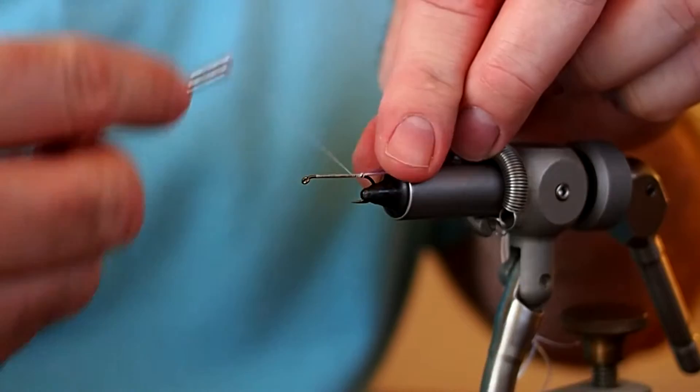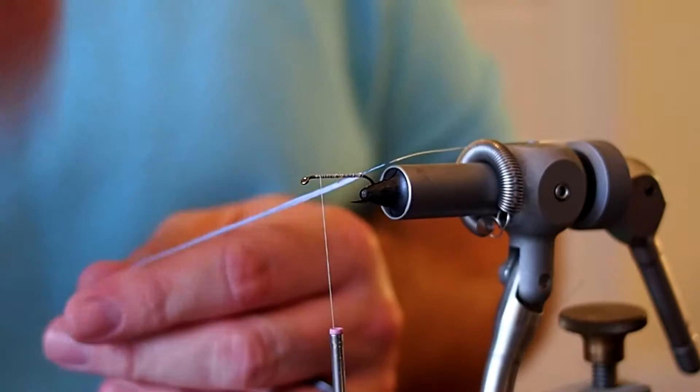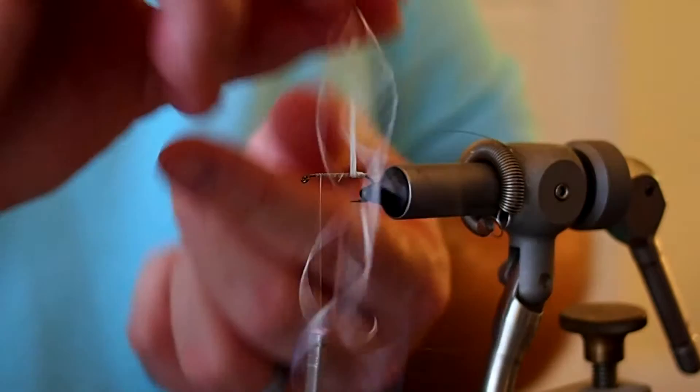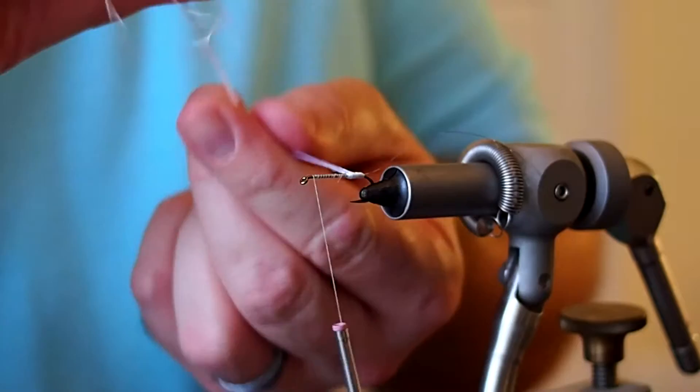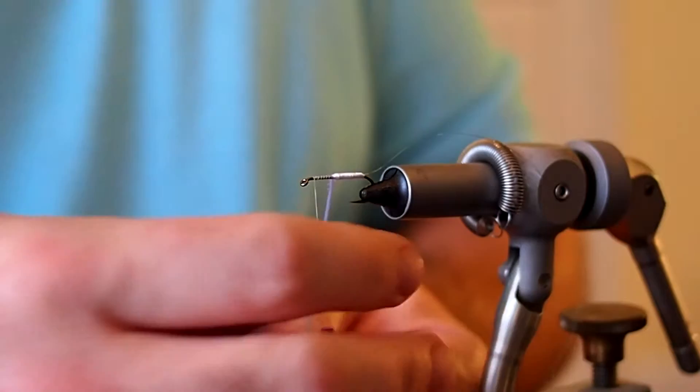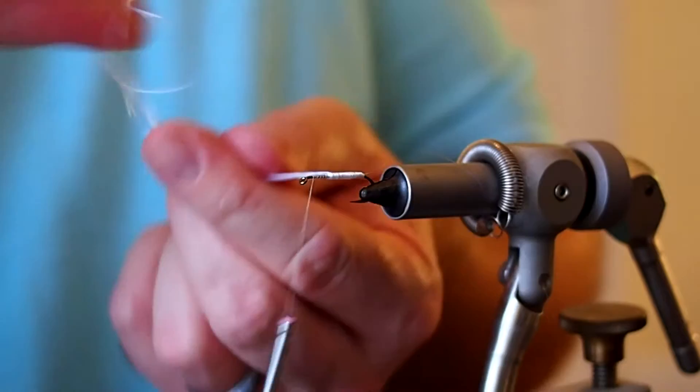Alright, next I'm going to go ahead and wrap our body with the floss. I like this method of wrapping floss bodies just by folding a section of the floss in half and then folding it in half around the thread because you're basically working with four lengths of floss and you can build up a body fairly quickly. So this pattern doesn't call for a thick body so I can just do this in a single pass.